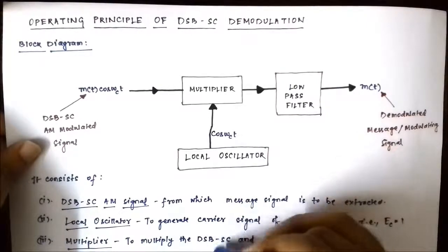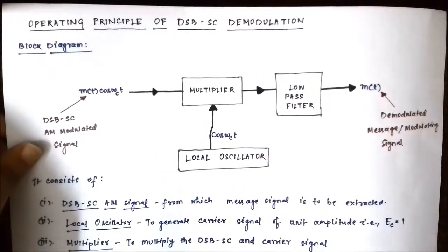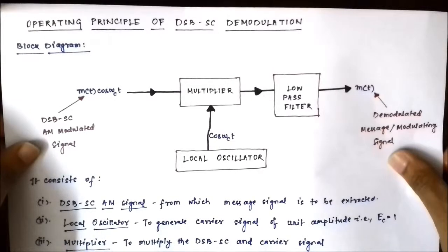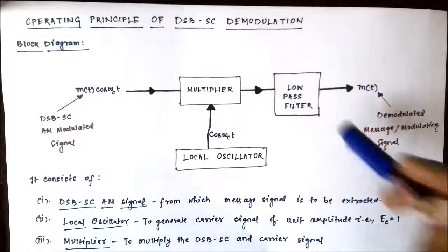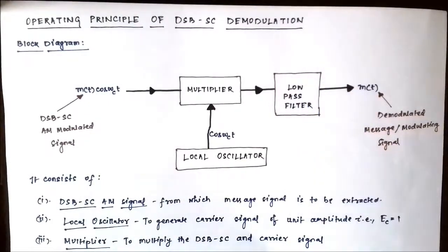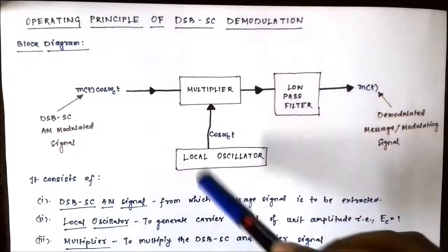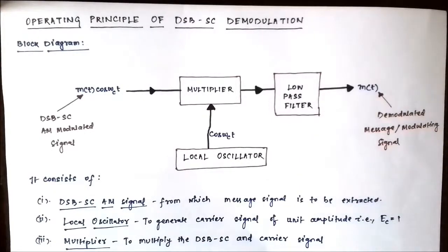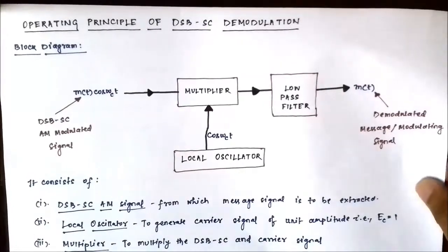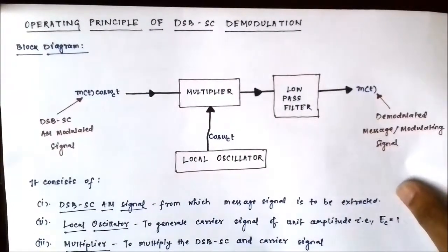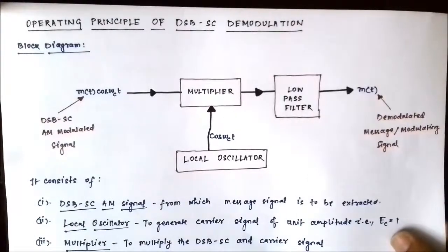Both these signals are fed to the multiplier, which performs the multiplication of the DSBSC signal and the carrier signal. Then, to extract the message signal from the DSBSC signal, we have a low pass filter with a suitable sharp cutoff frequency. These are the four main things involved in the demodulation process for a DSBSC amplitude modulated signal.